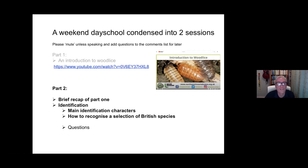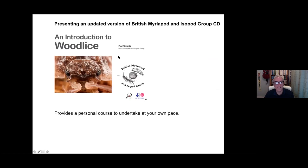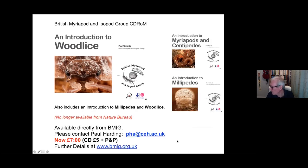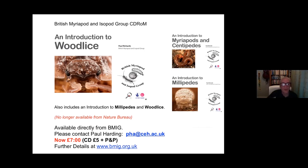There'll be a little bit of time for questions at the end. That is the CD-ROM which we've mentioned before, and it kind of draws to a conclusion the three or four talks we've done based on that CD. You can find the Millipedes and Centipedes and now part one of the Woodlice on YouTube. If you want to buy a copy of the CD, it's no longer available from Nature Bureau, but you can obtain it for £7 directly from BMIG, and Paul Harding will send you one directly.